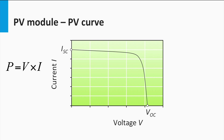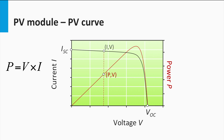We know that power is voltage times current. If you draw the power-voltage curve, or the PV curve, it takes a form as shown. Of course, an operating point on the IV curve will also correspond to a unique operating point on the PV curve.